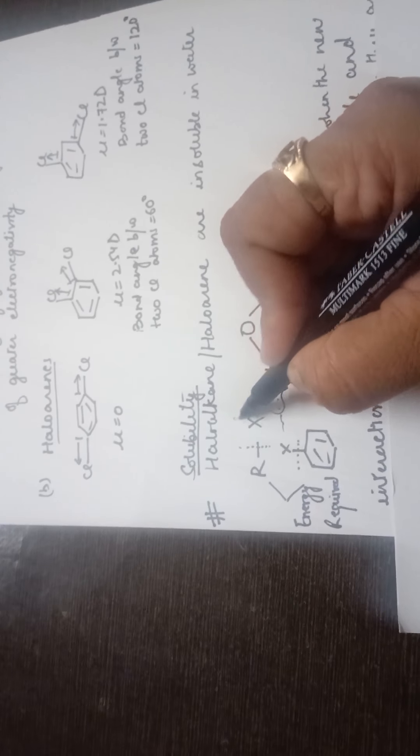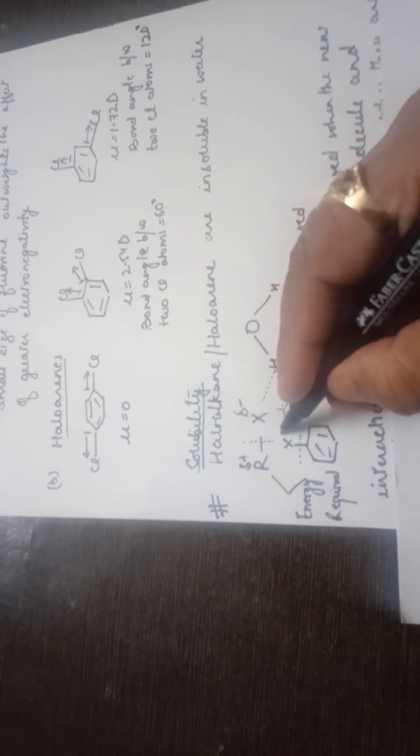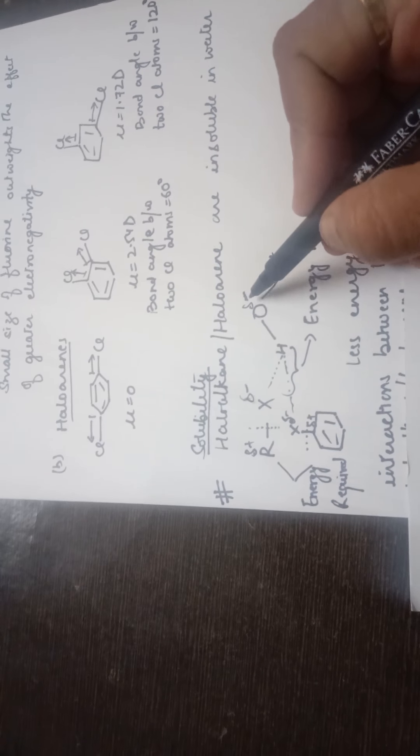Now coming to the next property — solubility. As already discussed, like dissolves like: a polar substance is soluble in polar solvents. In haloalkanes and haloarenes, the C-X bond is polar in nature. In both alkyl halides and aryl halides, the C-X bond is polar, meaning slight negative charge on X and slight positive charge on carbon. Water is also polar — oxygen being electronegative carries slight negative charge and hydrogen carries slight positive charge.